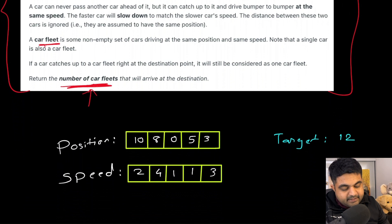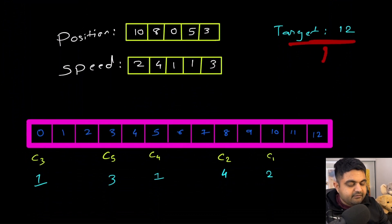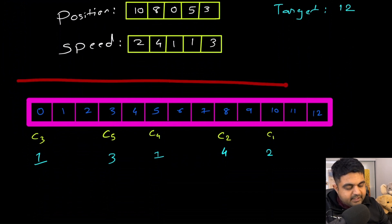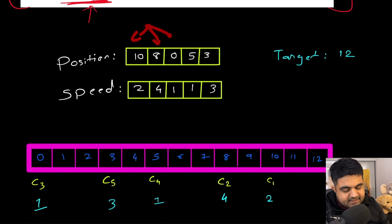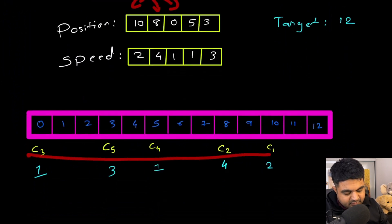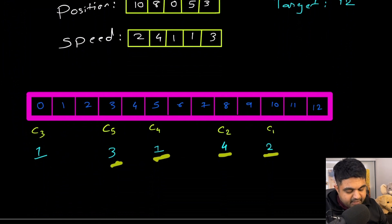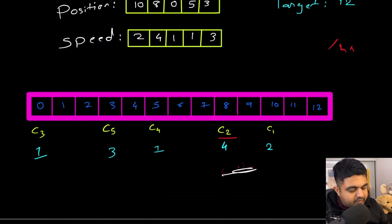So let's try to make it simpler using an example. We are given a target value of 12 that we need to reach, and we are given the positions and speeds of subsequent cars. I have plotted a number line where 12 is the target that every single car is trying to reach. C1, C2, etc. represent different cars, and based on their positions in the array, I have already plotted them on this line — this defines their starting position. And this portion defines the speed given to every single car. The distance we are covering is 12 miles and the speeds are given on a per-hour basis, so car C2 travels four miles in one hour.